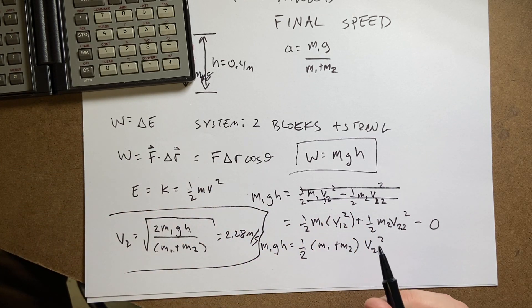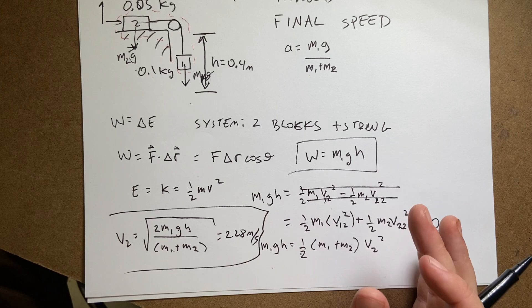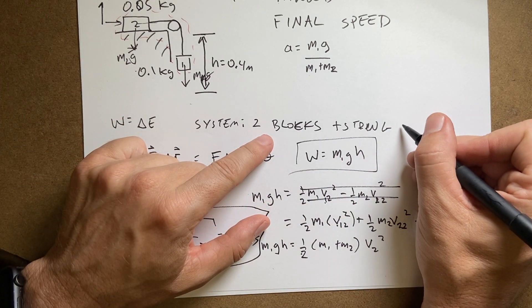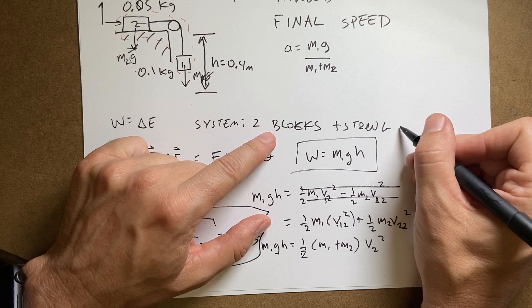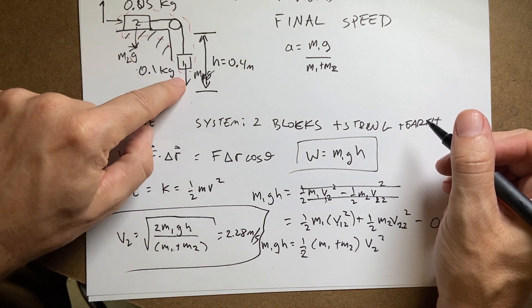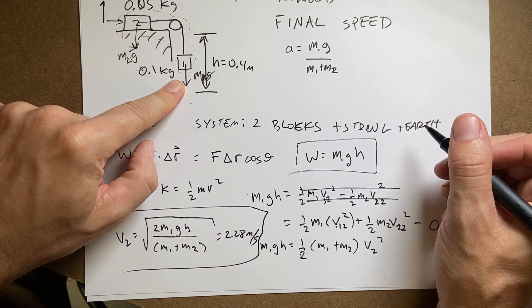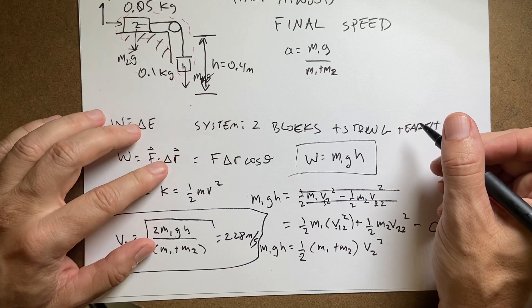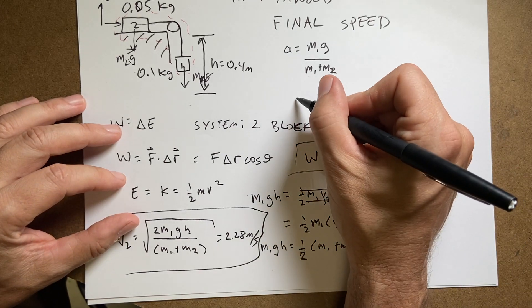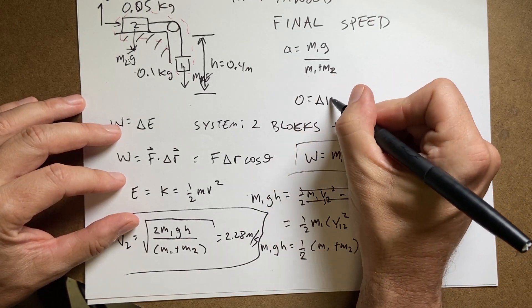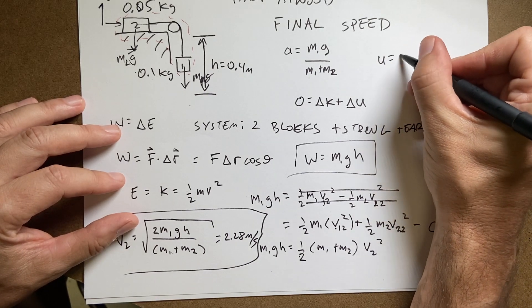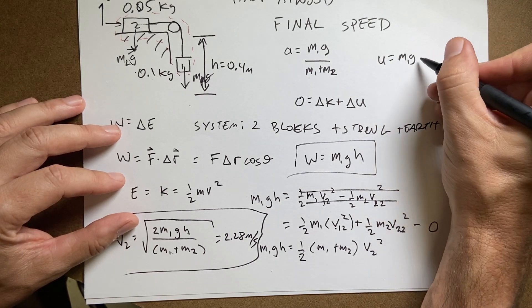Okay, now let me just say, since we're talking about this particular problem, what if I had picked a different system? What if I had picked the system is the blocks plus the string plus the earth? In that case, these gravitational forces wouldn't do any work because they're part of the system. So instead, I'd have no work done because the normal force still does no work. But now I'd have 0 is the change in kinetic energy plus the change in gravitational potential energy, where gravitational potential energy is m1gy.